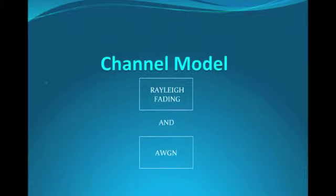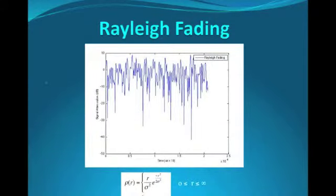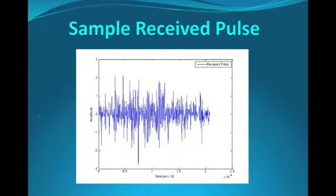As I mentioned before, the channel models both Rayleigh flat fading and additive white Gaussian noise. The Rayleigh fading channel is modeled based on the probability distribution function you see here, which we studied in the course, and the additive white Gaussian noise is actually created using a built-in function of MATLAB that overlays that onto the signal as well. Here is a sample pulse after it's been through that very destructive channel. As you can see, it's broken down pretty significantly from what we saw before, but we're going to send it to the receiver and hopefully we can recover that signal.